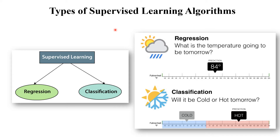There are two types of supervised learning algorithms: regression and classification. Classification means you classify the data — for example, whether a temperature is cold or hot. Regression means the value continuously changes — for example, temperature changes throughout morning, afternoon, and evening. Let's see each in detail.